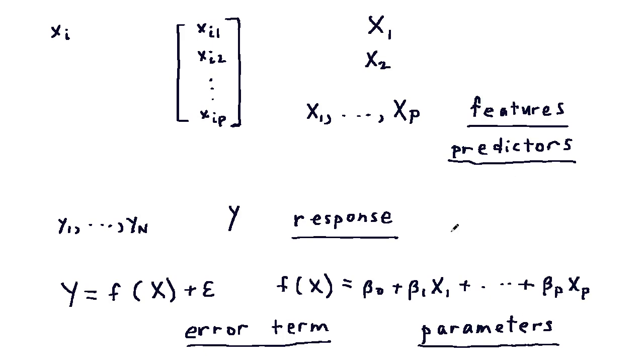Now we don't know the values of beta 0 through beta p. However, we can use the training data to approximate the values of beta 0 through beta p.